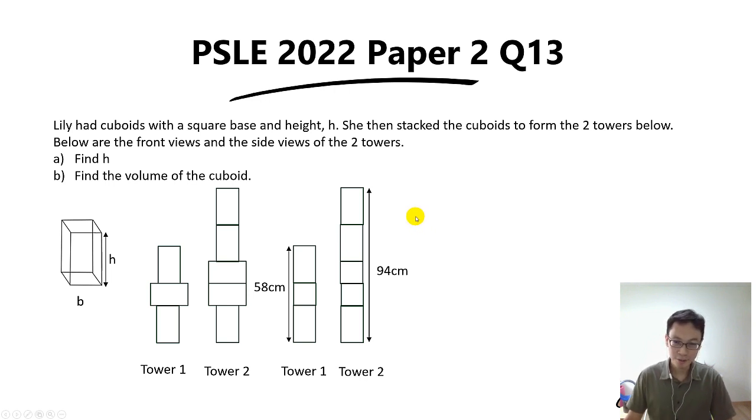Let's go through this question. Lily had cuboids with a square base and a height h as shown below. The base is a square and we let the breadth here be b, and the height is h.